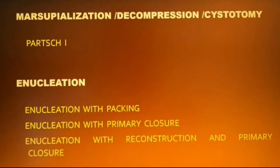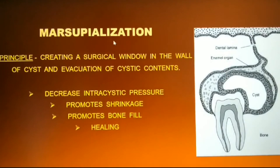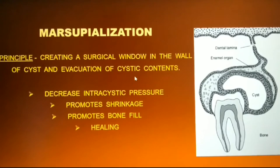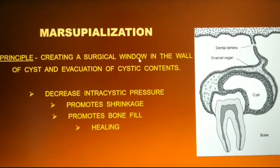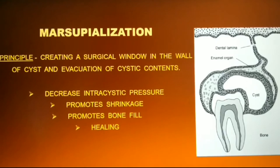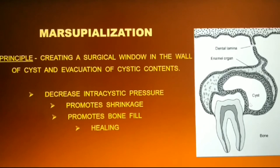Today we shall be discussing in detail about marsupialization. The term marsupialization is derived from the word marsupials — animals having a pouch in their lower abdomen to carry their young babies. Similarly, we are converting the cystic lining into a pouch through this procedure. The principle of marsupialization is to create a surgical window in the wall of the cyst and evacuate its cystic contents. If this is the cyst associated with a tooth, we are creating a window in the cortex of the bone and evacuating the cystic contents, thereby decreasing the intracystic pressure.